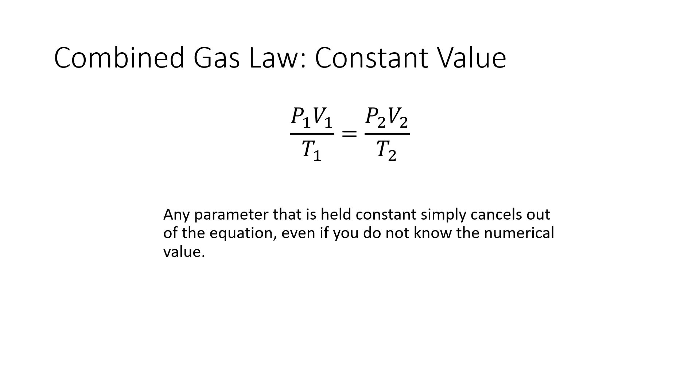If temperature is held constant, then T1 and T2 are the same number, and so they basically just fall out of the equation. They cancel each other out. And what we're left with with constant temperature is P1V1 equals P2V2, which is also known as Boyle's law.